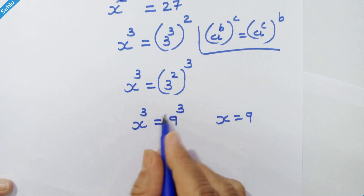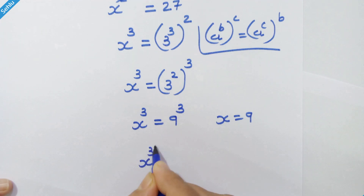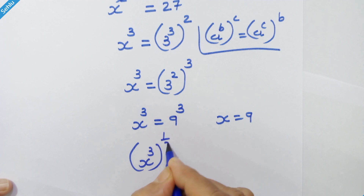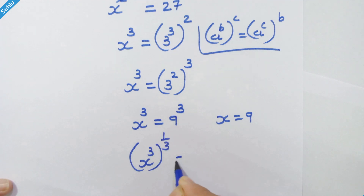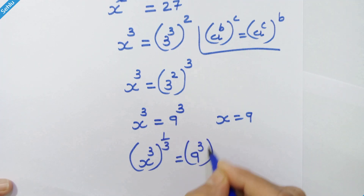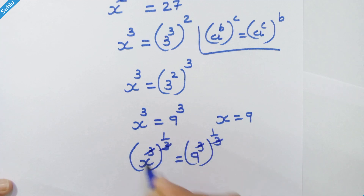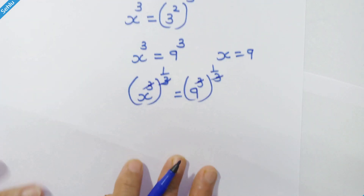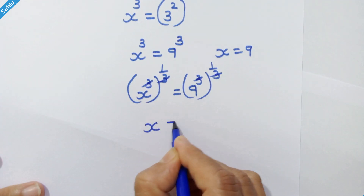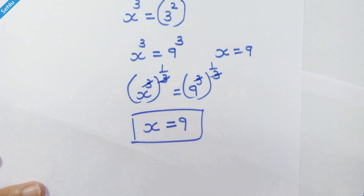How? If we raise 1 upon 3 at both sides, x raised to 3 whole raised to 1 upon 3 is equal to 9 raised to 3 whole raised to 1 upon 3. This 2 will be cancelled, so x is equal to 9. 9 is the answer.